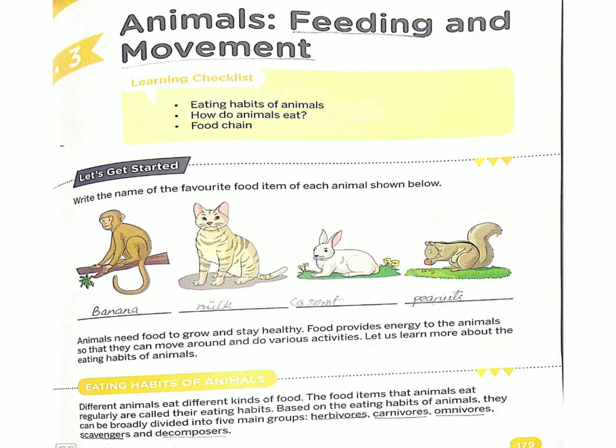Aise hi, jaise hum apni man pasand ka khana khate hain — humari according, jo humhe pasand hota hai, hum wohi food eat karte hain — to aise hi animals bhi hote hain. To unki eating habits ke according unhain divide kiya gaya hai.